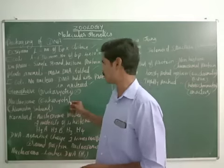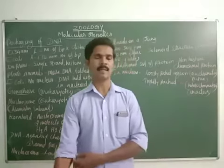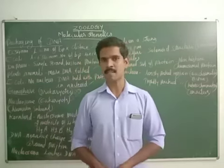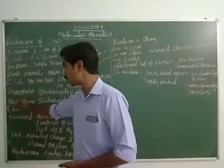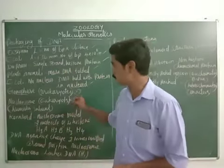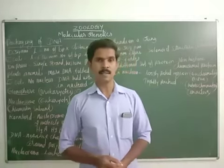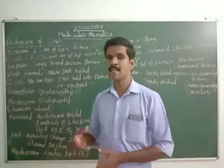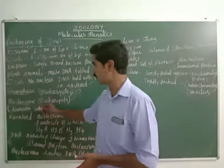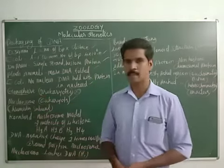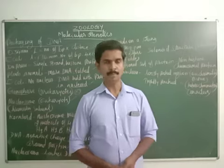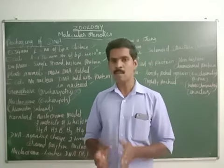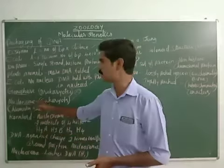In eukaryotic cells, the chromatin fiber is made up of many repeated subunits. The name of that repeated unit is called the nucleosome. One scientist named Kornberg first proposed the structure of the nucleosome.